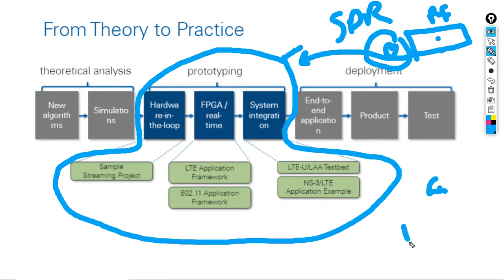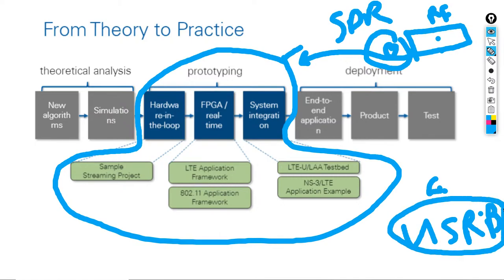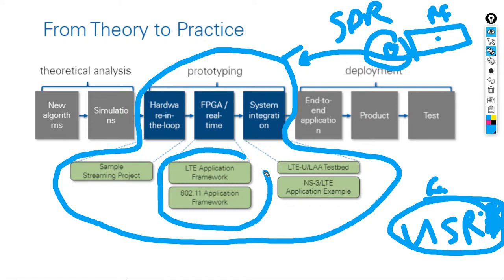Examples of these devices are USRP devices — very commonly used in the industry to test wireless communication systems. You design your system in the baseband, encode and program it, connect with the device, and you will see your transmission in real time. You have hardware-in-the-loop, sample streaming projects, and the FPGA which is inside the USRP device.